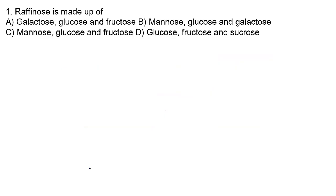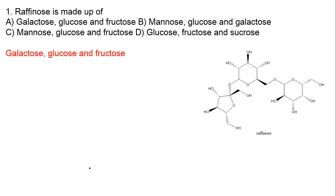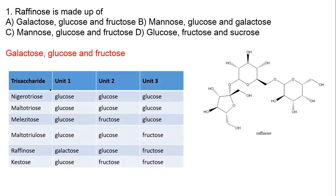The first question: raffinose is made up of which sugars? From the question itself it is clear that raffinose is a trisaccharide, made up of three monomers. The answer is galactose, glucose, and fructose — option A. The five-membered sugar in the structure is fructose; the other two are galactose and glucose. Important trisaccharides to memorize: maltotriose (three units of glucose), raffinose (galactose, glucose, fructose), and kestose (glucose, fructose, fructose).